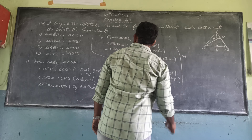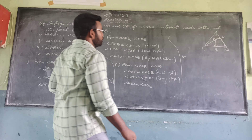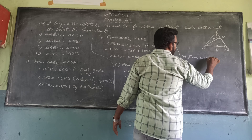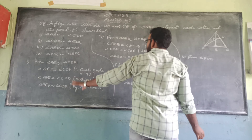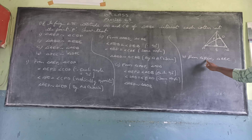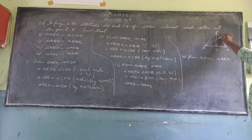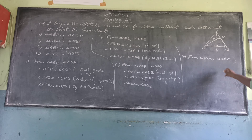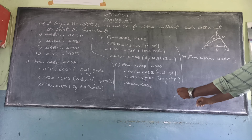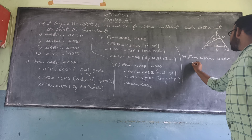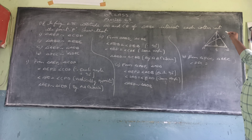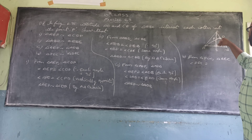For the fourth part, from triangle PDC and triangle BEC. We observe that PDC is this triangle and BEC is this triangle. We can write that angle PDC is equal to angle BEC.